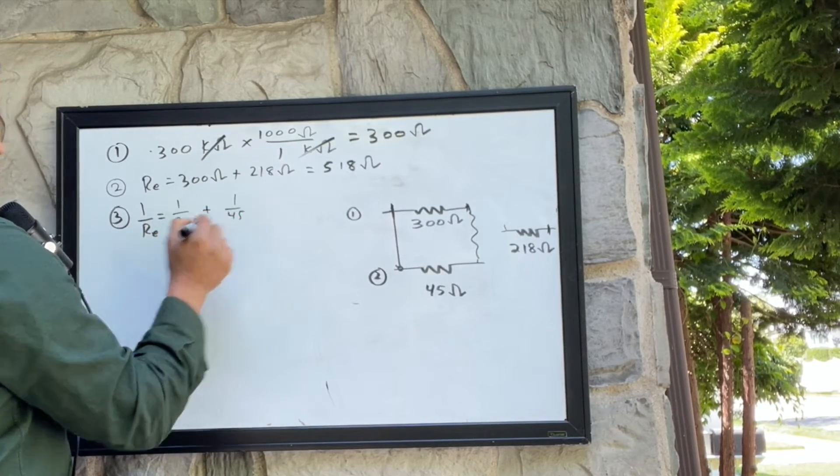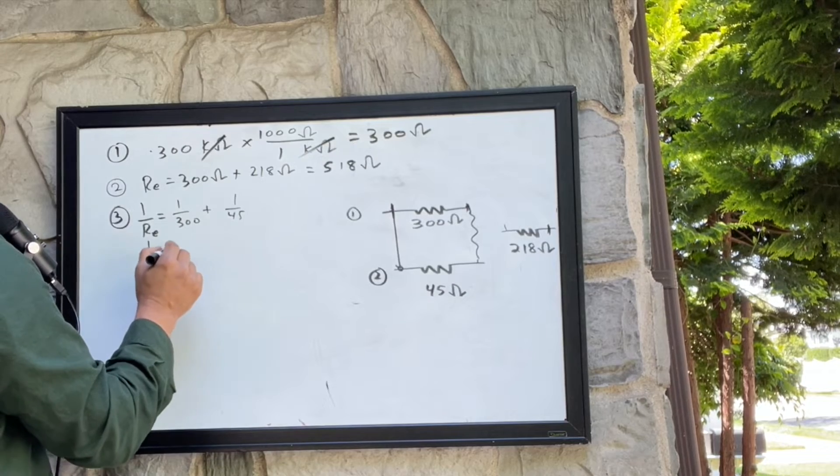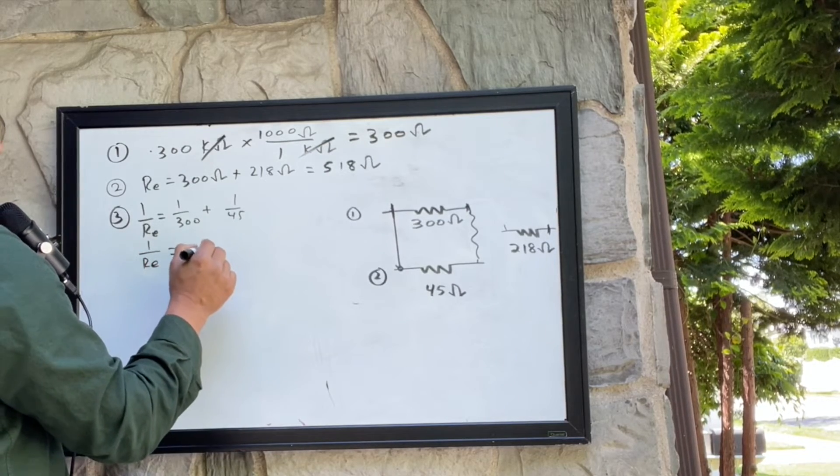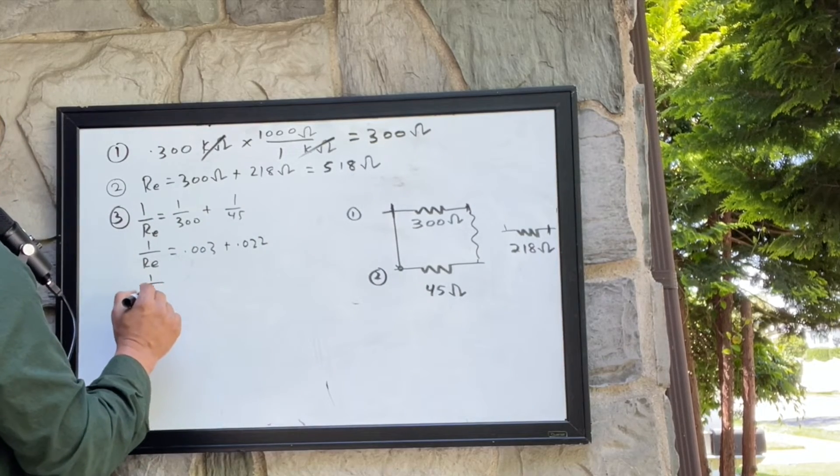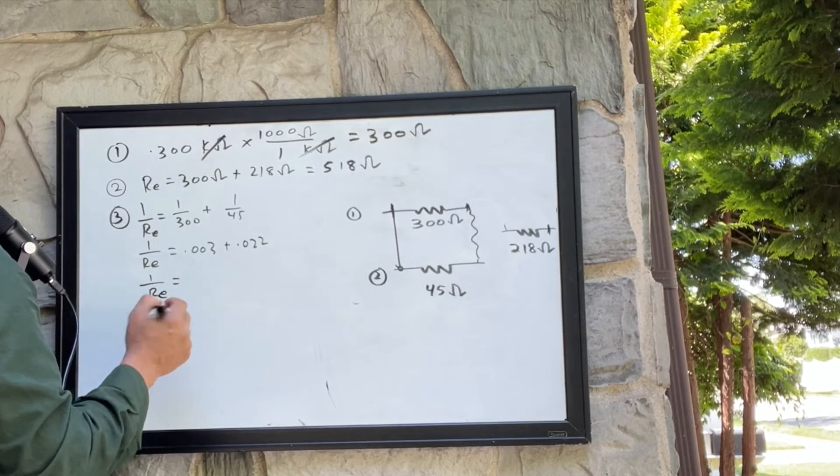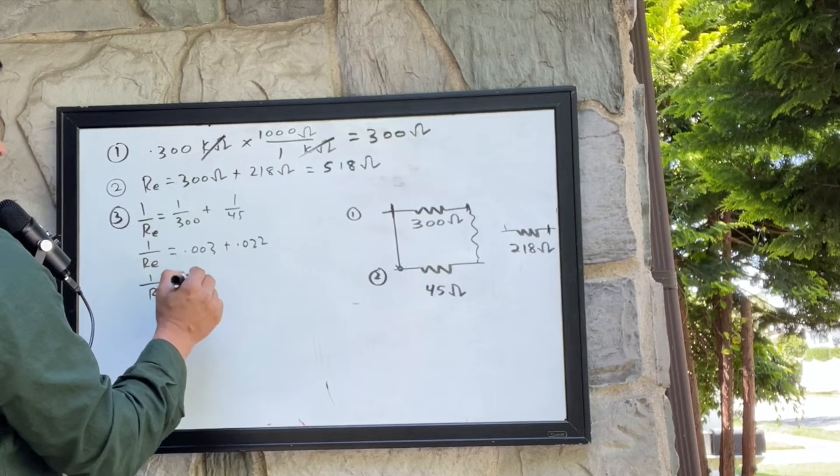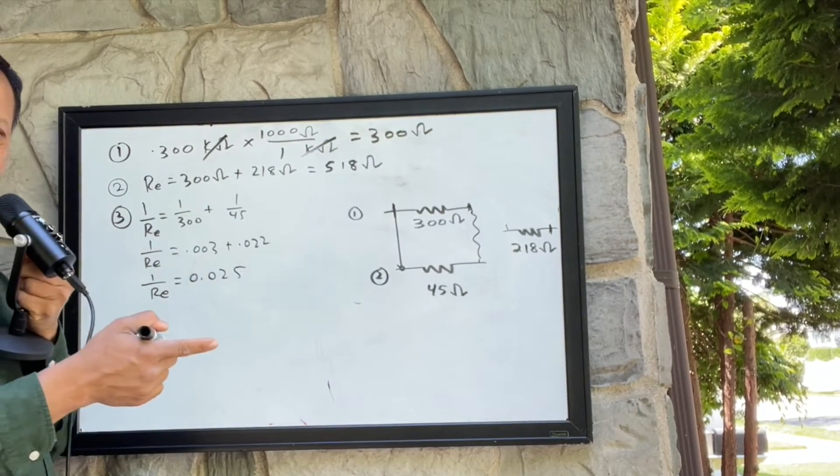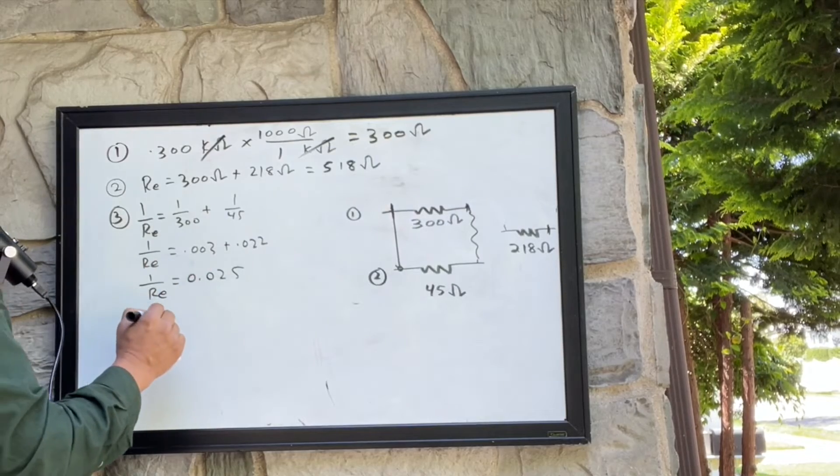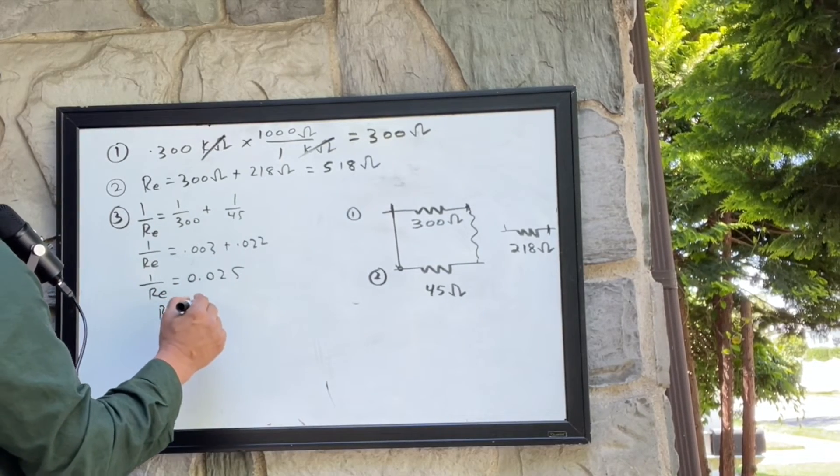So 1 over 300 is 0.003 plus 1 over 45 is 0.022, so equivalent resistance, that's what we are trying to find, is 0.025. And if you cross multiply it you get the equivalent resistance and that is 40 ohms.